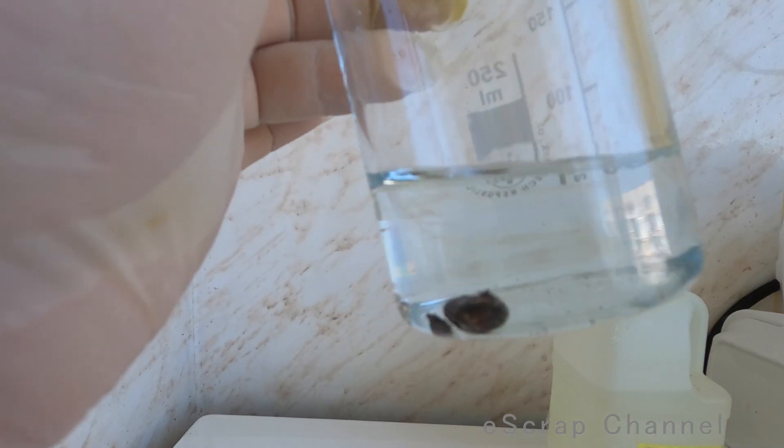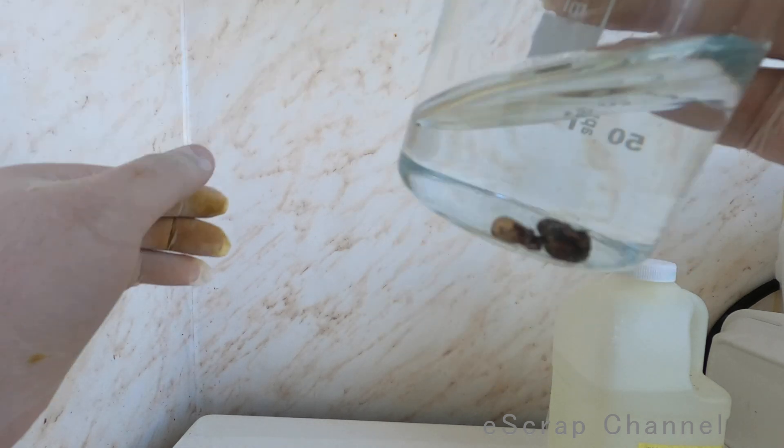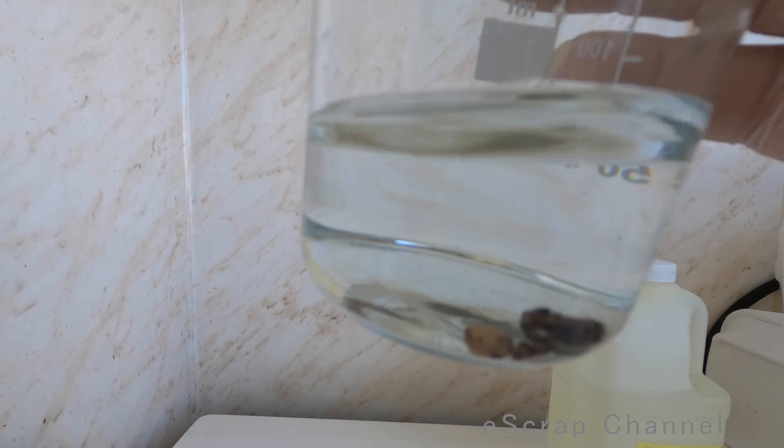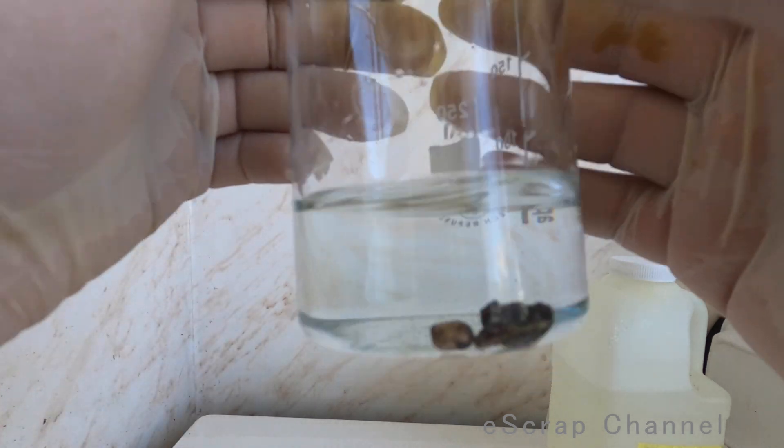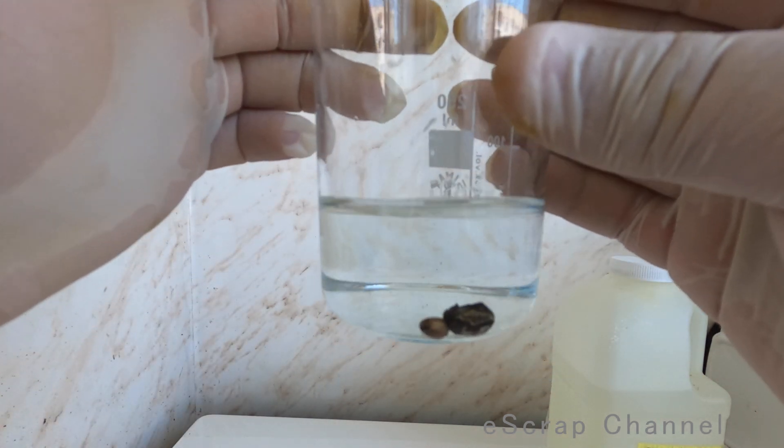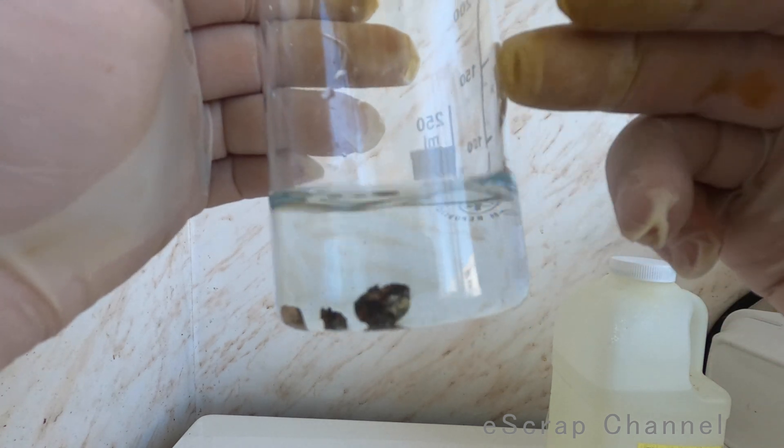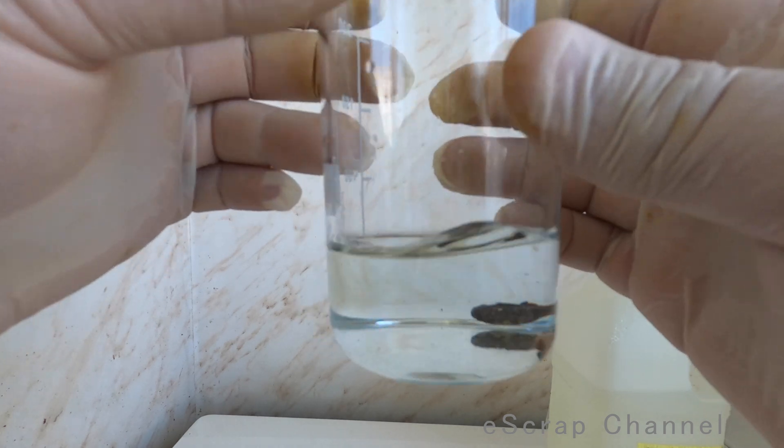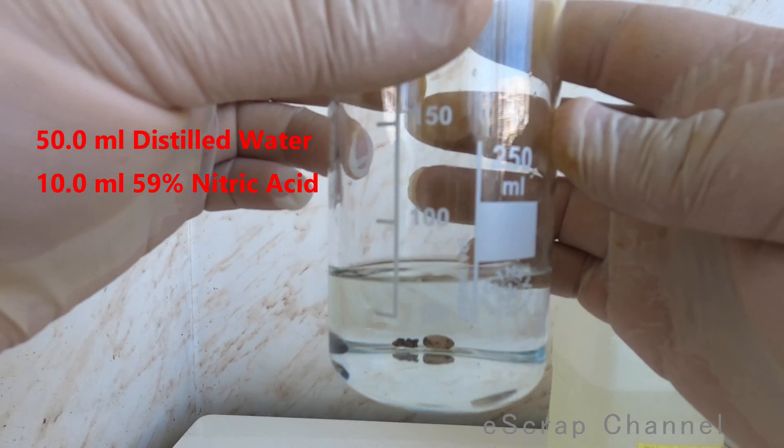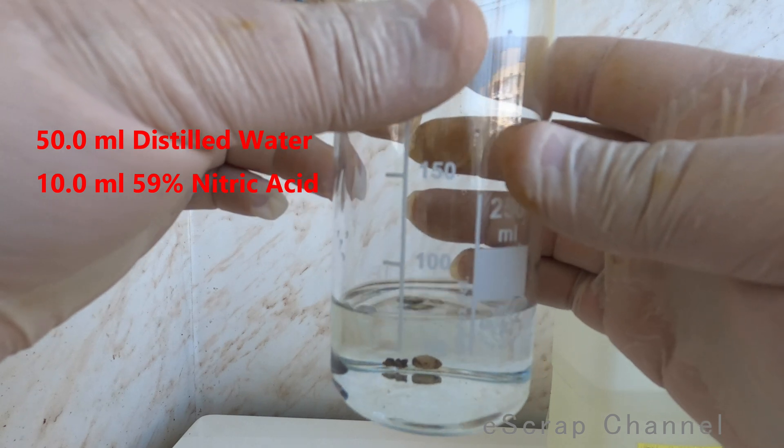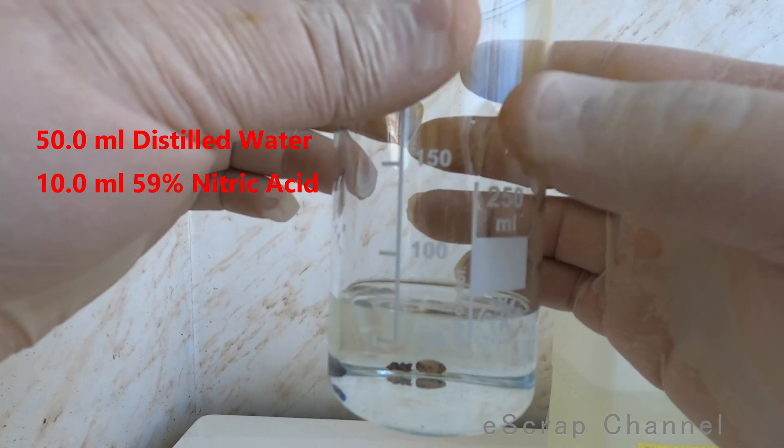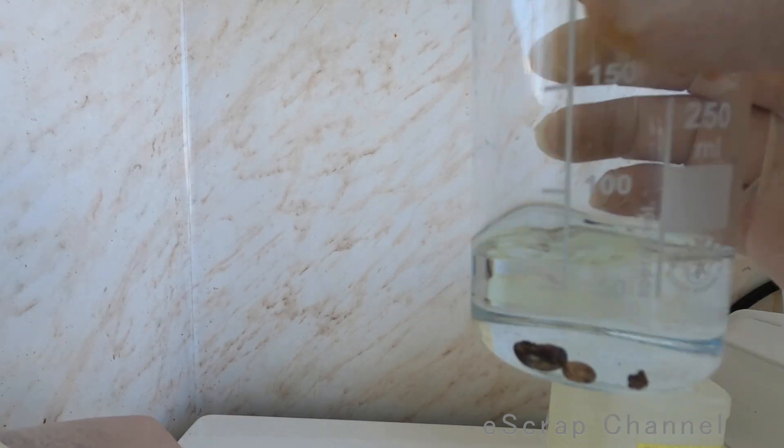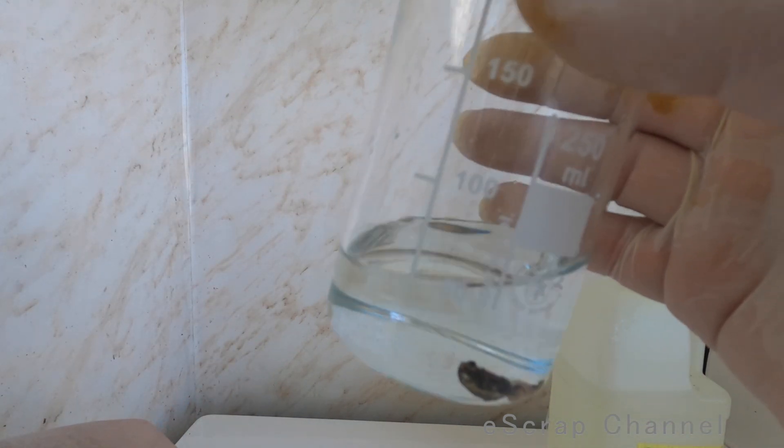So the first step will be to check if there is any base metal and if there is any to dissolve it. I put distilled water, about 50 milliliters distilled water and about 10 milliliters 59% nitric acid.